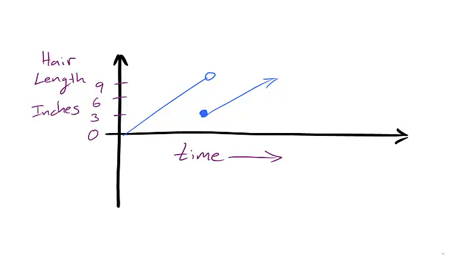Take, for example, hair length. Most people get haircuts, which would add a jump discontinuity to the relationship between hair length and time.